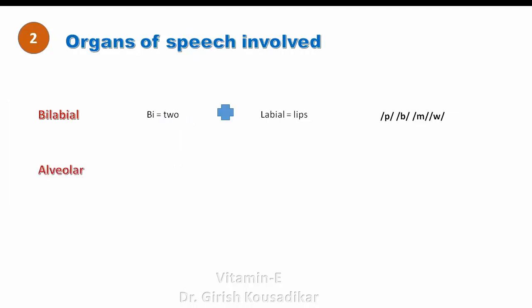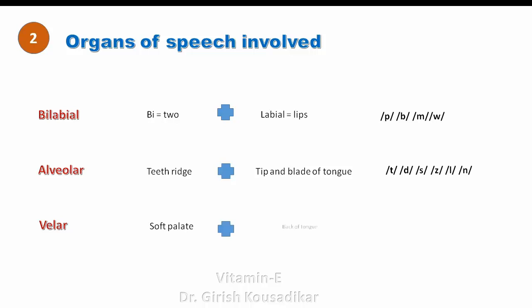Alveolar, also known as the teeth ridge, makes a combination with the tip and blade of the tongue in the production of sounds like /t/, /d/, /s/, /z/, /l/, and /n/. The teeth ridge is the part of the hard palate just behind the upper teeth. The next term is velar — a combination of the back of the tongue and the soft palate.